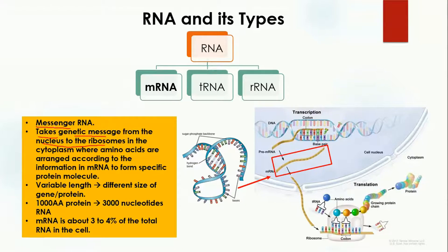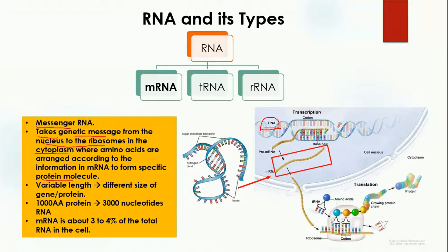The genetic message stored in DNA is taken by messenger RNA, which moves from the nucleus to the ribosomes in the cytoplasm. There, amino acids are arranged according to the information in the messenger RNA to form specific proteins. In this diagram, the blue part is the nucleus, which contains DNA that stores genetic information. This genetic information is transferred into messenger RNA.